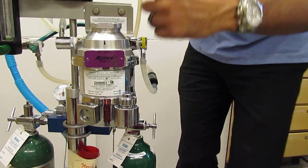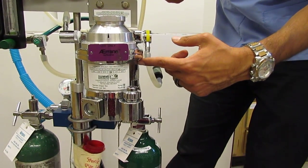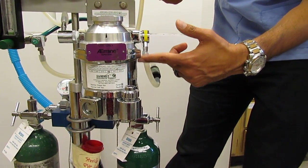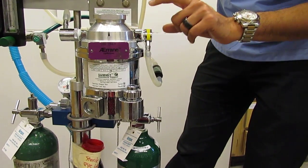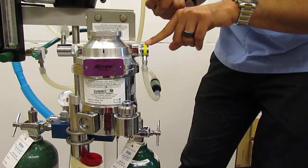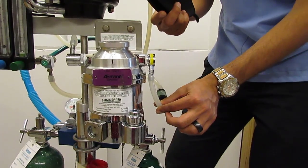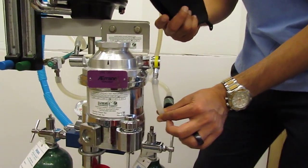Then, we pick up the anesthetic gas. The oxygen picks up the anesthetic gas in here in the vaporizer, and then it comes out through the vaporizer outlet. What is leaving the vaporizer is now a mixture of anesthetic gas and oxygen.